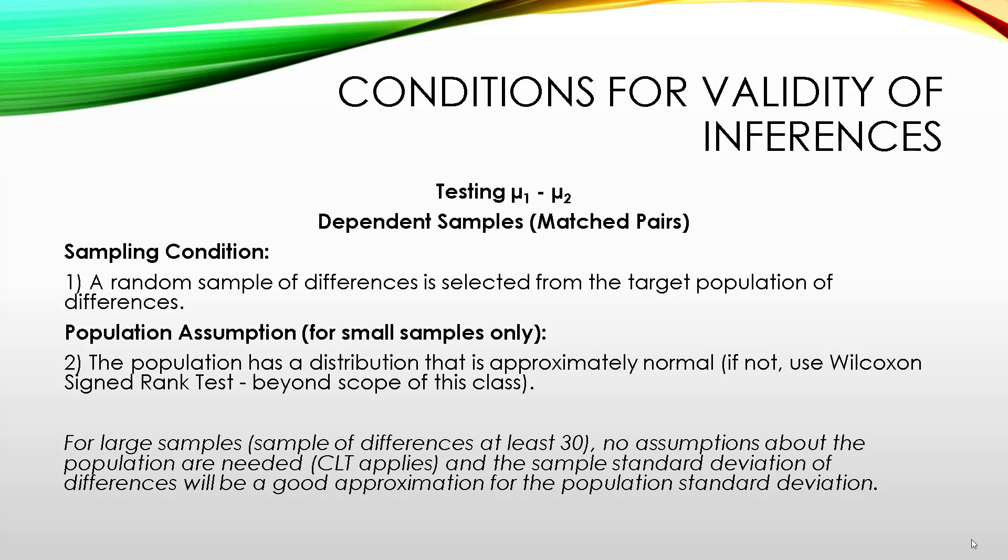The second set of assumptions really only applies if we're dealing with small samples. So for a small sample, we have to assume that the population has a distribution that's approximately normal. If not, there is a way to get around this. You can use the Wilcoxon signed rank test, but that's beyond the scope of the class. However, it is in your textbook if you're interested. For large samples, sample sizes where the differences are at least 30, you don't need to make any assumptions about the population because the central limit theorem applies. And the sample standard deviation of differences will be a good approximation for the population standard deviation.